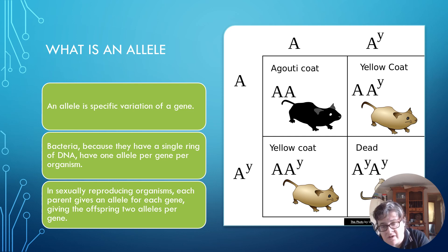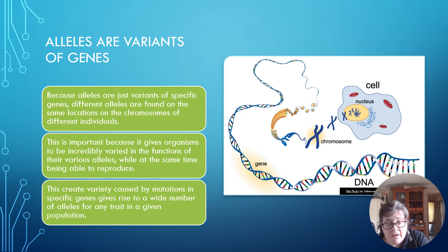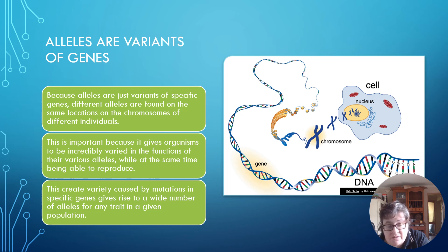An allele might control coat color, for example coat color in mice. Alleles are variants of genes — they are just variants of specific genes. Different alleles are found at the same locations on chromosomes of different individuals. This is important because it gives organisms incredible variety in the functions of their alleles while still being able to reproduce. This variety is caused by mutations in specific genes, giving rise to a wider number of alleles for any trait in a given population.